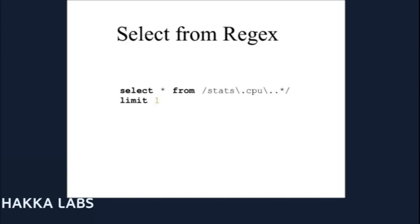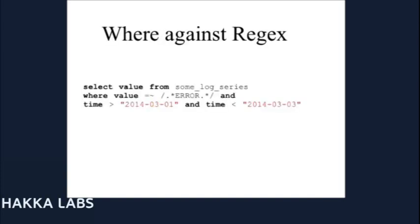You can also have string values as columns. That makes it possible to do interesting things — you can feed your logs and log lines into this. You can say, let's look at the log lines for this day and look for 'error.' If you had one data point per log line, it would just grep through all those points and return the ones that match.